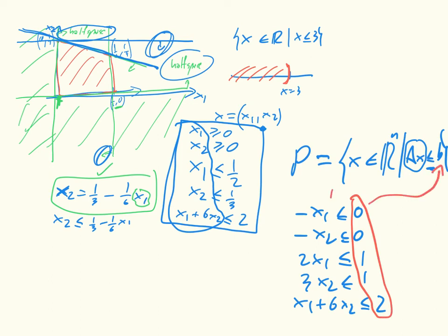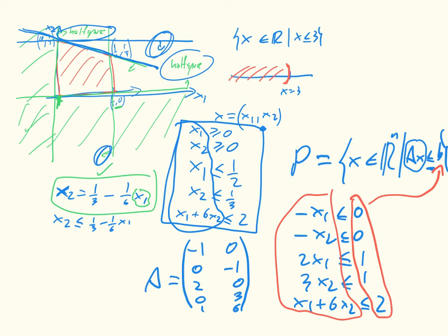And then our A, we can just read off from that, and we'll get that A is going to be equal to minus 1, 0, 0, minus 1, 2, 0, 0, 3, and then 1 and 6. And that's another way of defining our polytope P.